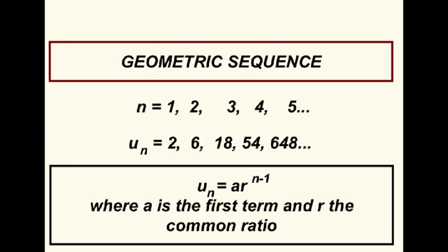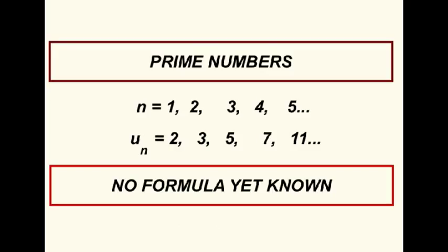A prime number is a natural number that has only one and the number itself as factors. One is not included as a prime number. There is no formula for indefinitely finding the nth prime number, although formulae have been derived that work up to a certain value of n.